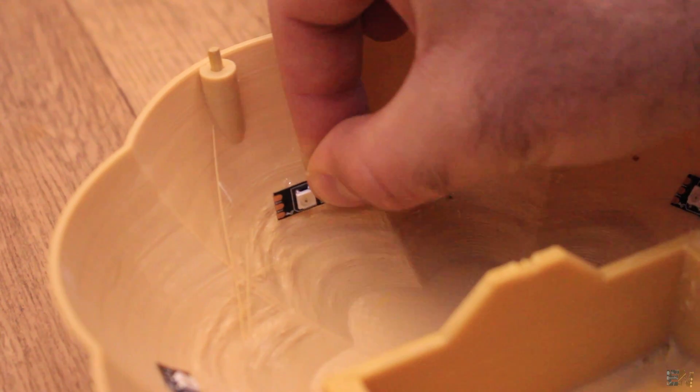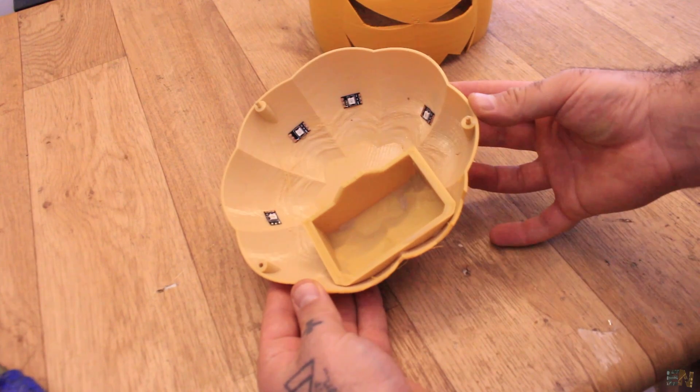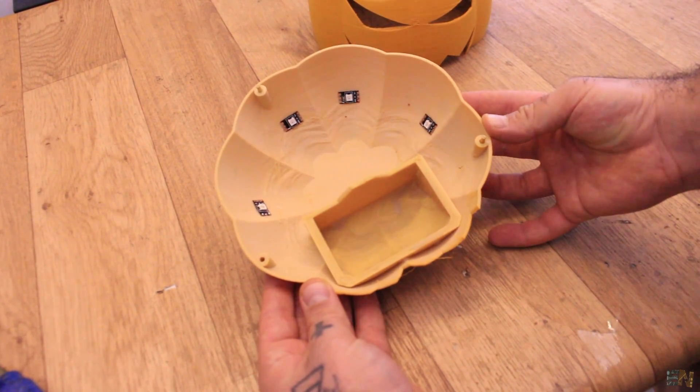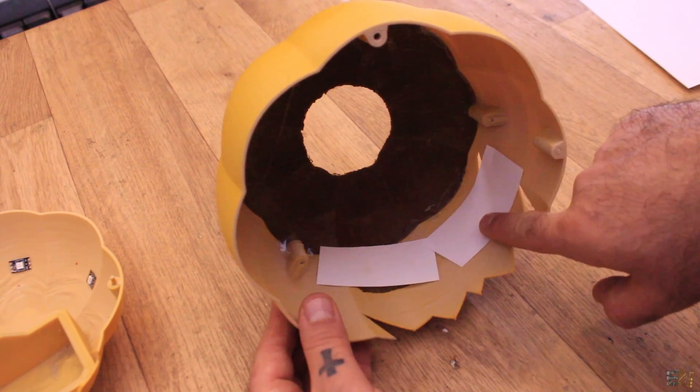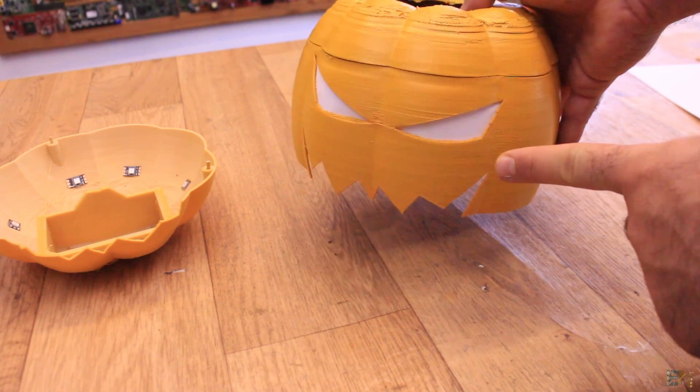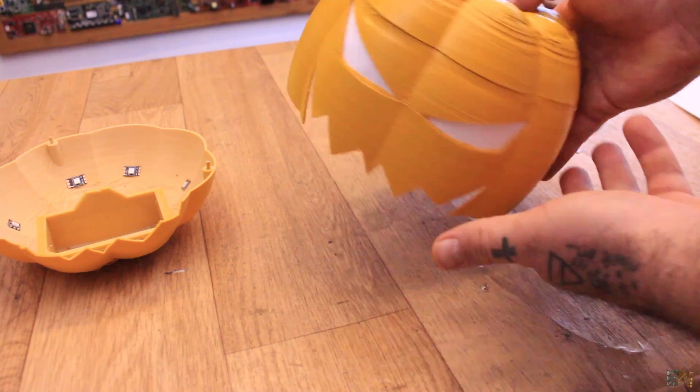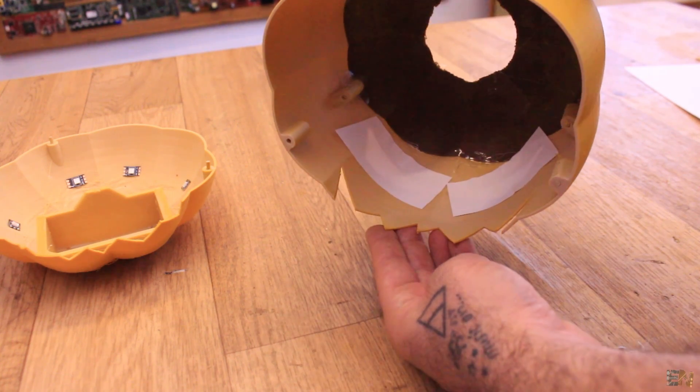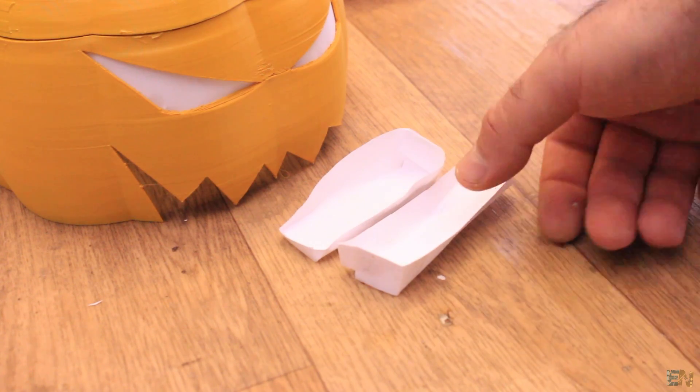So I will place the first 4 LEDs on the bottom part like this. Now you should cut 2 pieces of white paper. Now glue those on the back of each eye. So now the light will be a little bit more diffused.